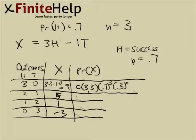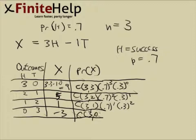And here, same thing, 2 success and 1 failure. Here we have 1 success and 2 failures. And finally, we have 0 success and 3 failures.